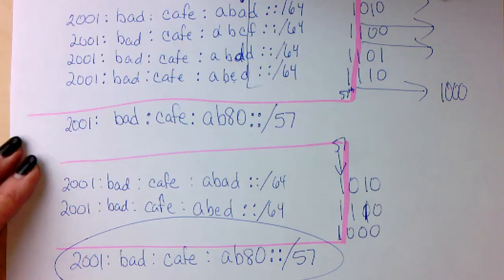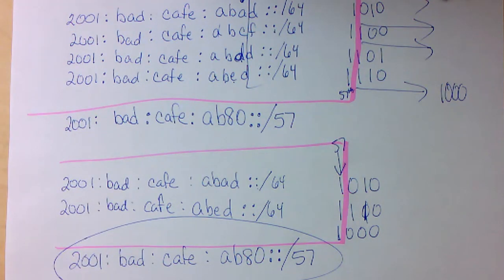That would be my summary network IPv6 address. So that does it for route summarization and IPv6. Remember, break it down to binary and everything becomes easier.